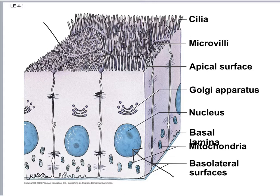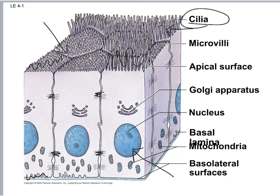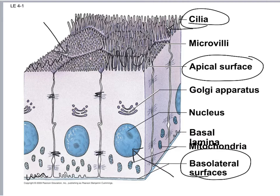Cilia — long finger-like projections — are on one end and not the other. The surface exposed to the inside of the passageway is called the apical surface, and the surface that's deep — connected to the rest of the body — is called the basolateral surface. Organelles like the nucleus and mitochondria hang toward that basolateral surface, which also goes along with polarity.